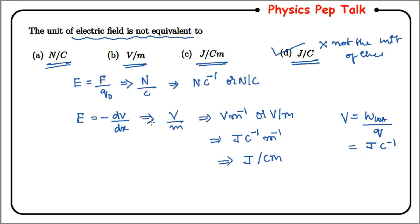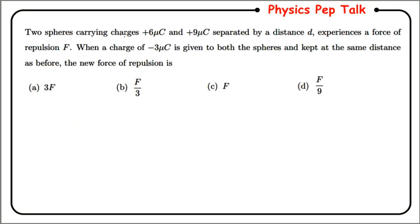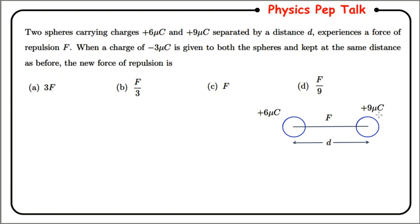Let us look into the next question. Two spheres carrying charges plus six micro coulomb and plus nine micro coulomb, separated by a distance d, experience a force of repulsion F. One sphere has charge plus six micro coulomb and the other has plus nine micro coulomb, with separation distance d.